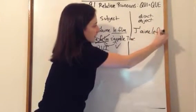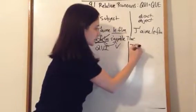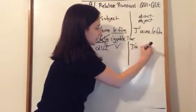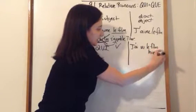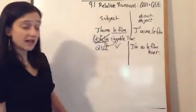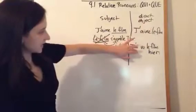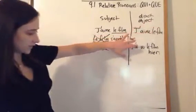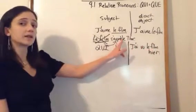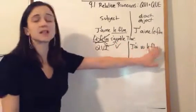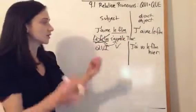We'll keep it, j'aime le film, and then we'll say, j'ai vu le film hier. So, again, we have two related ideas, the movie, the movie here. But, in this sentence, le film is not the one that's doing the action, it is receiving the action. It is the thing that was seen. It is our direct object. So, what do we do?